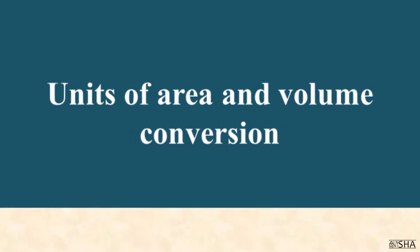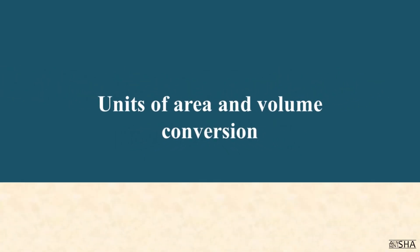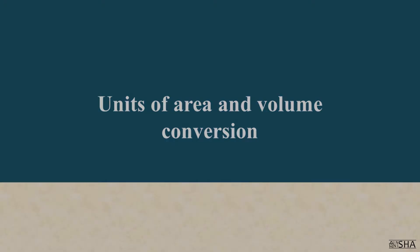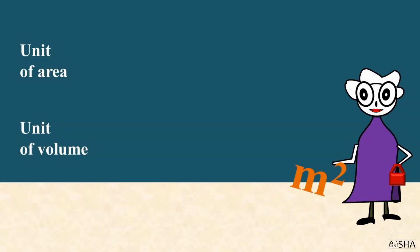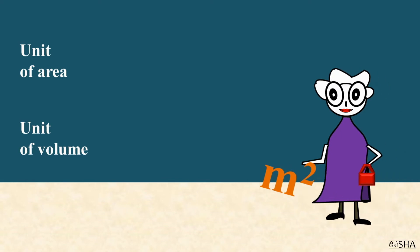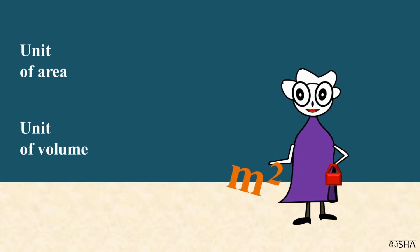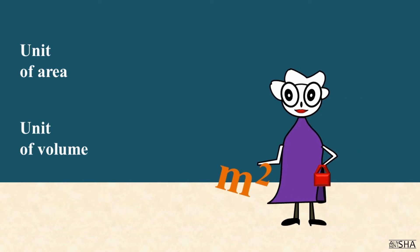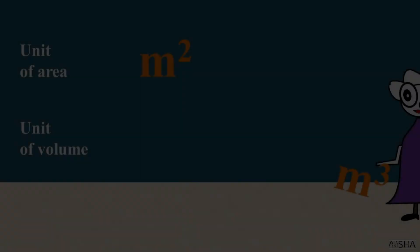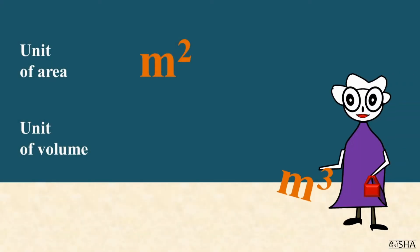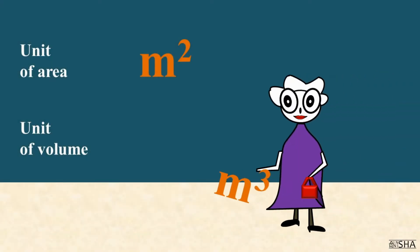In this episode, we'll talk about basic units of area and volume, and of course, about their conversions. In the SI system, a unit of area is a square meter, and a unit of volume is a cubic meter.